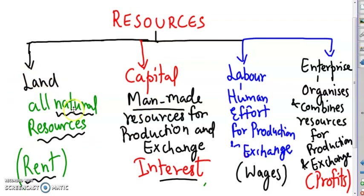Land relates to all natural resources. Capital relates to all man-made resources, for the purpose of production and exchange. Labour is any human effort, mental or physical, relating to the production and exchange — it is all labour.